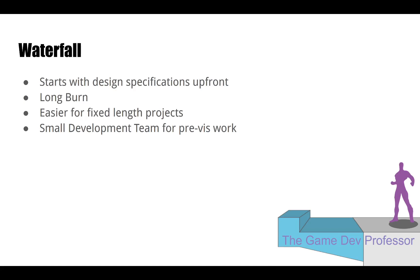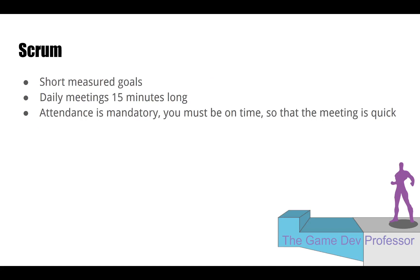Scrum is something you'll come across — there is something called a scrum master, but generally when people say scrum they're talking about agile. What you'll probably be expected to do is talk about short, measured goals. This happens every day. I've been in scrum meetings where one person's job is to make sure the meeting doesn't go too long. Attendance is mandatory and you have to be on time — people who wander in two or three minutes late get socially punished with dollars into the donut jar or something like that, because otherwise these meetings end up being a half hour long.